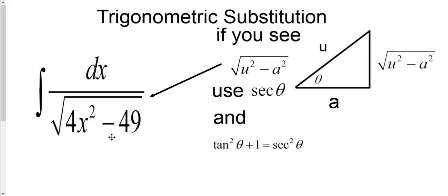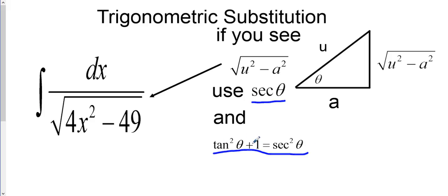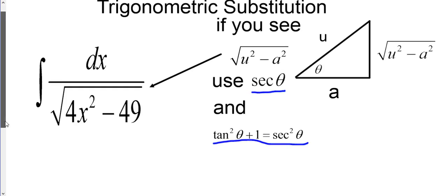When you have a square root and notice the difference of two squares — here I have 4x² minus 49, which we call u² minus a² — this is where you want to try trigonometric substitution. With this form, where you have a variable term squared minus a constant squared, we use secant. Secant is the ratio of hypotenuse to adjacent leg, and this comes from the trig identity: tan²θ + 1 = sec²θ.